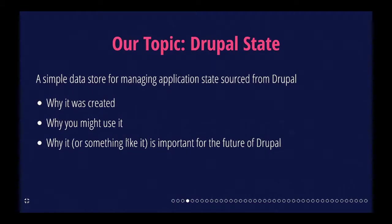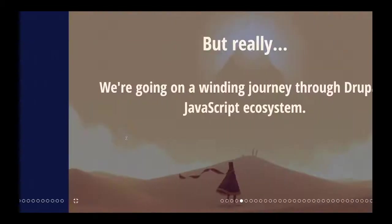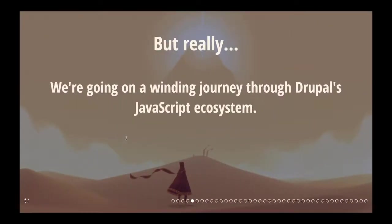Today we are going to be talking about a library called Drupal State, which is a simple data store for managing application state sourced from Drupal. We'll talk about why it was originally created, why you might want to use it, and why I think it — or something like it — is very important for the future of Drupal. We're also going to go on a winding journey through Drupal's supporting JavaScript ecosystem.